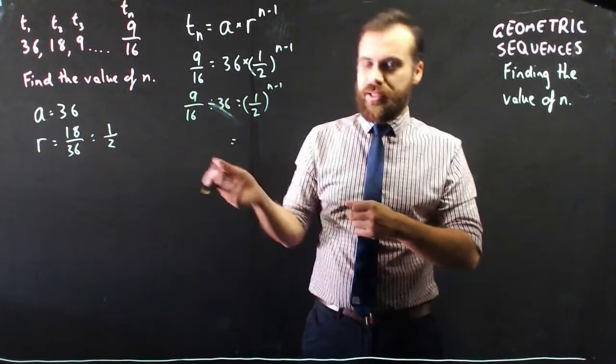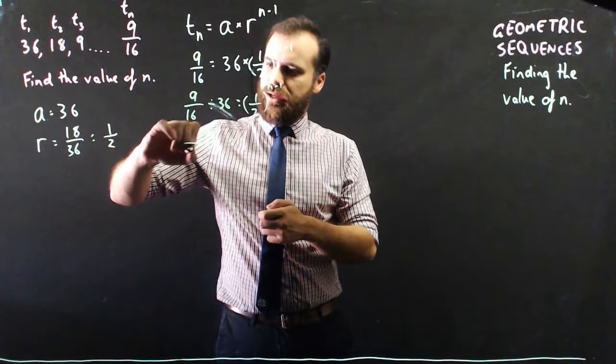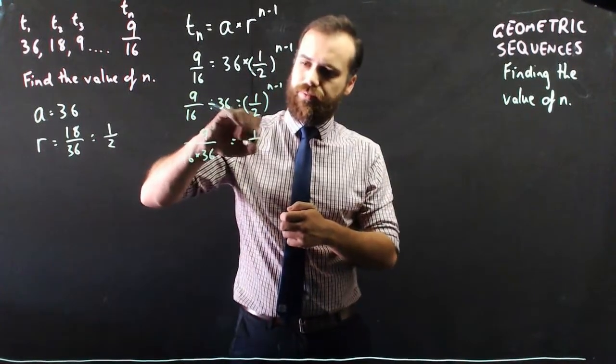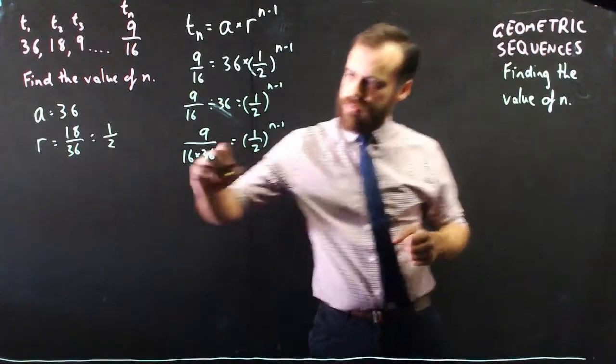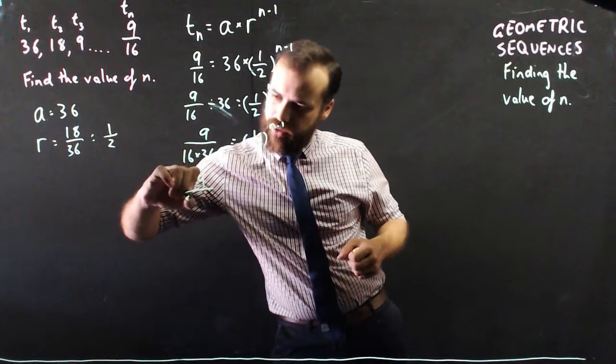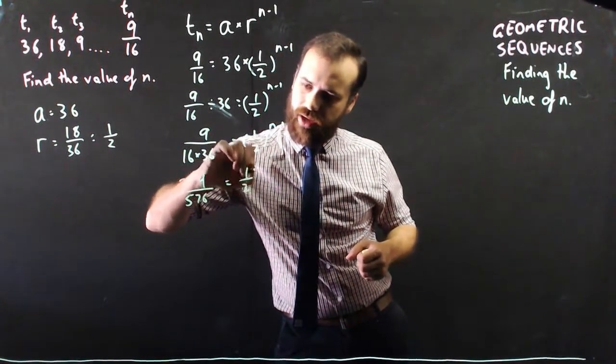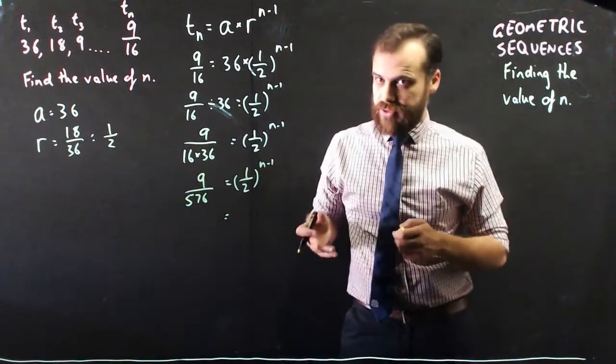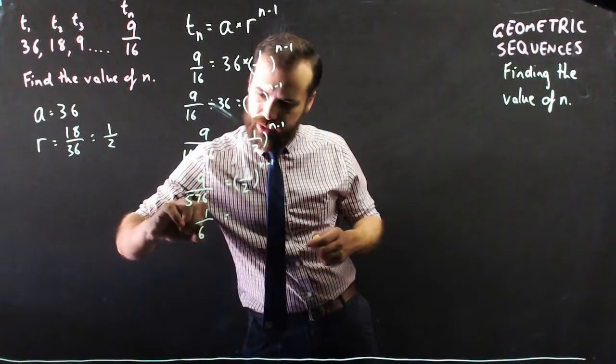Now really that's the same as 9 on 16 times 36, might need a calculator for that. So that's going to be 9 on 576, which is equal to one half n minus 1. 9 on 576 simplifies to 1 on 64.